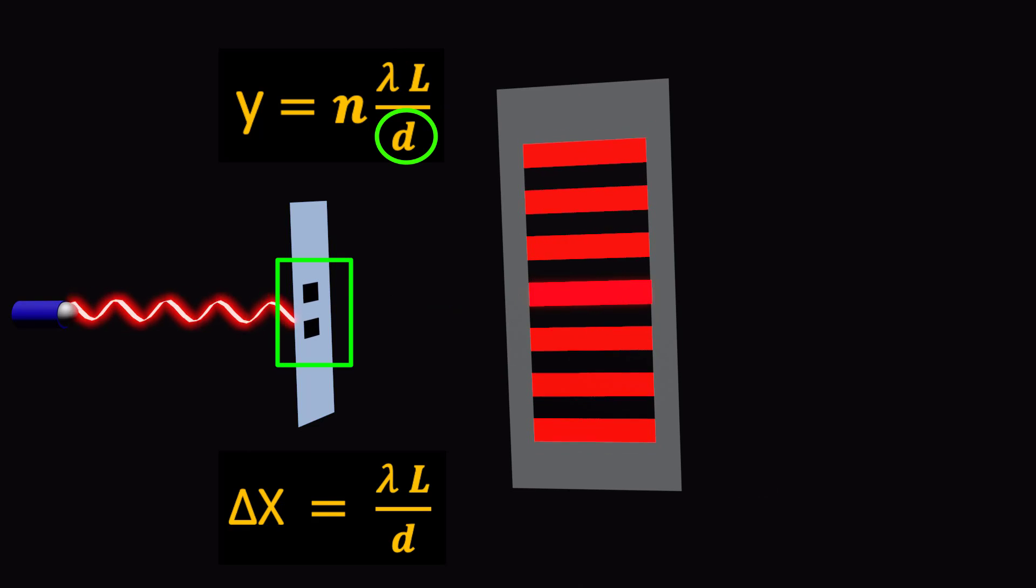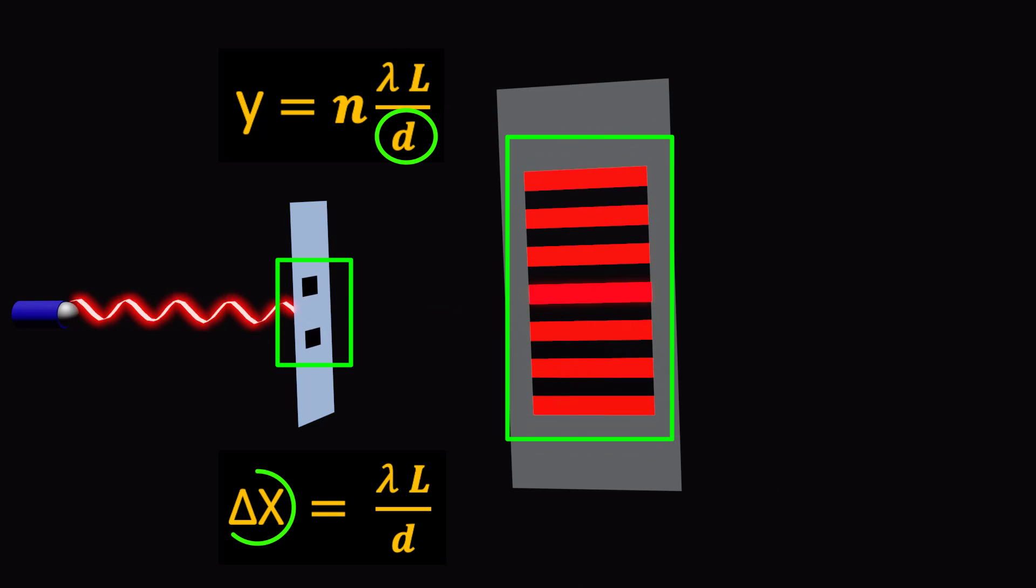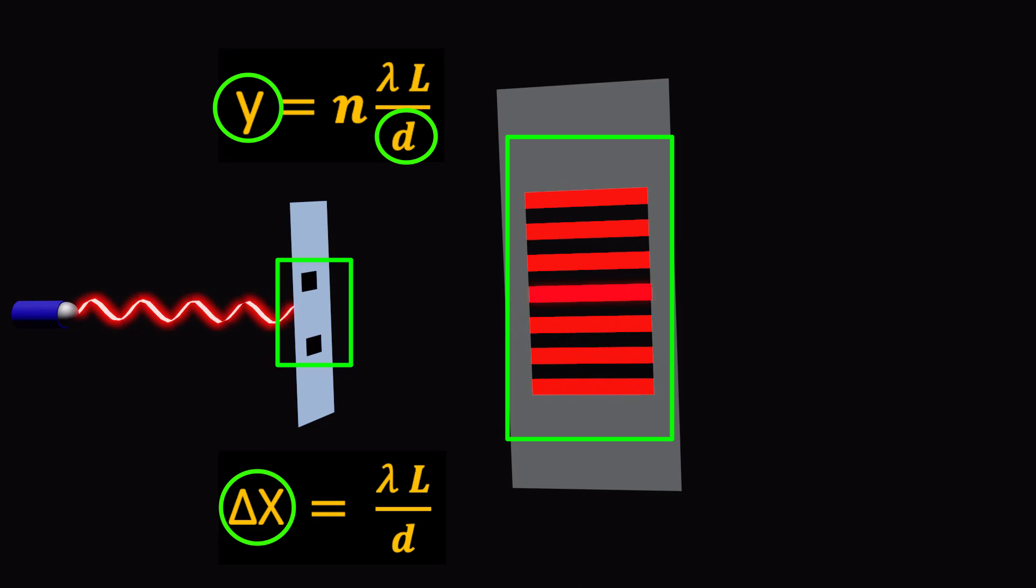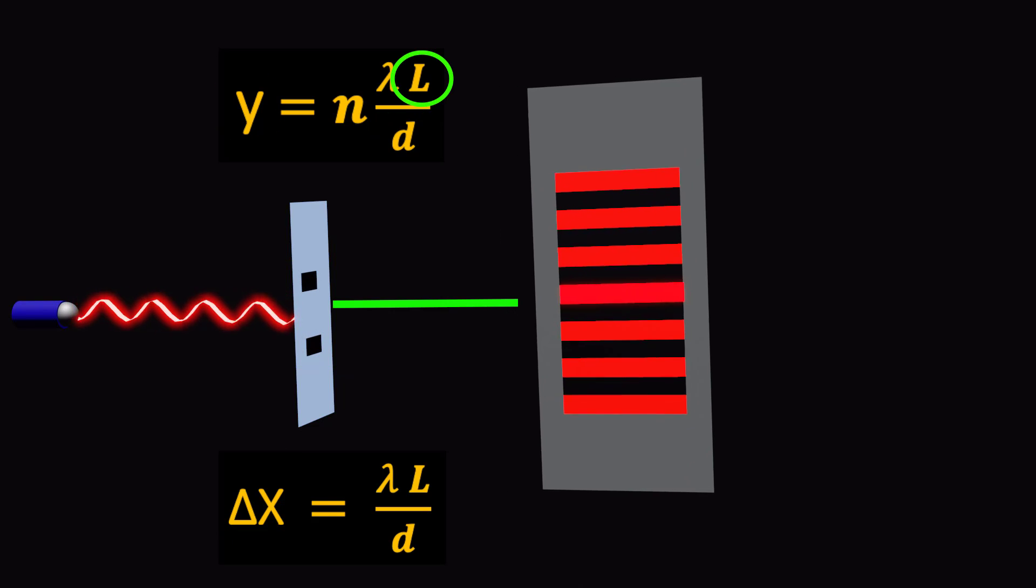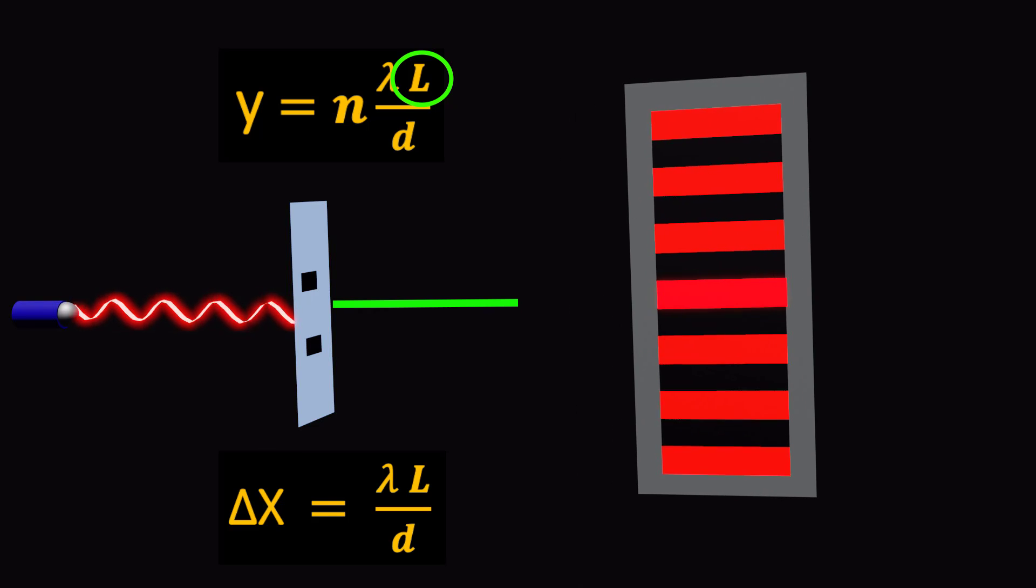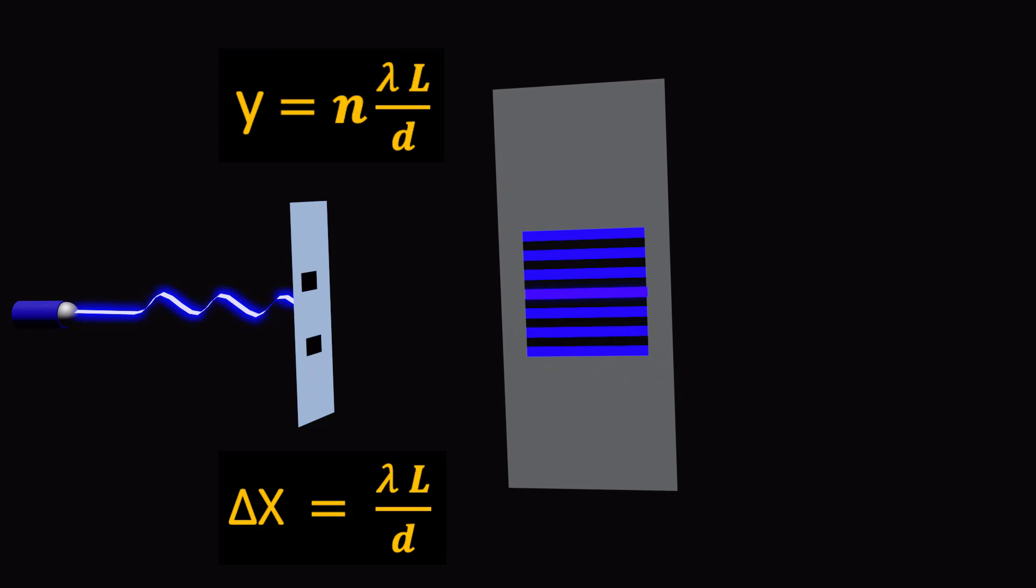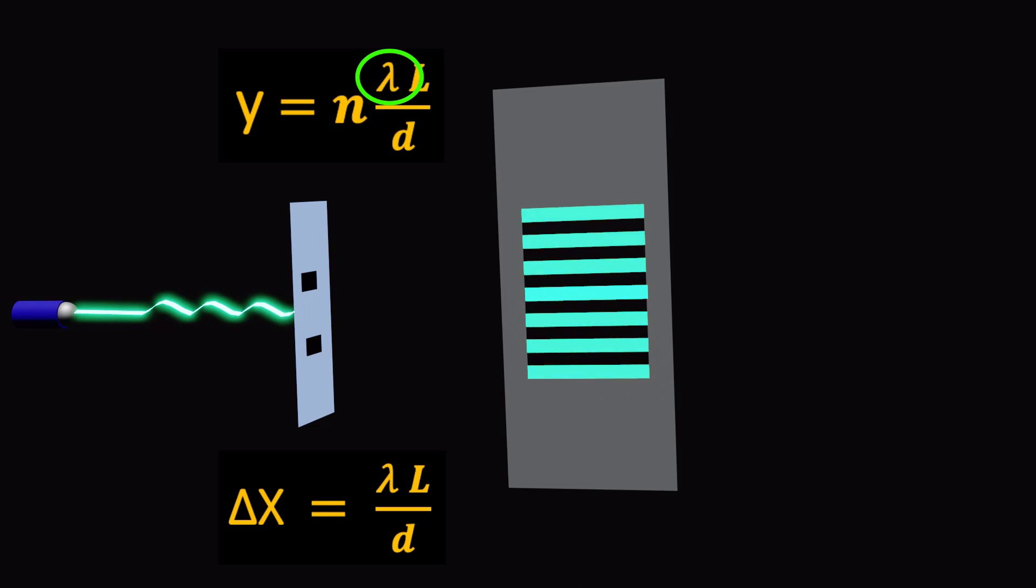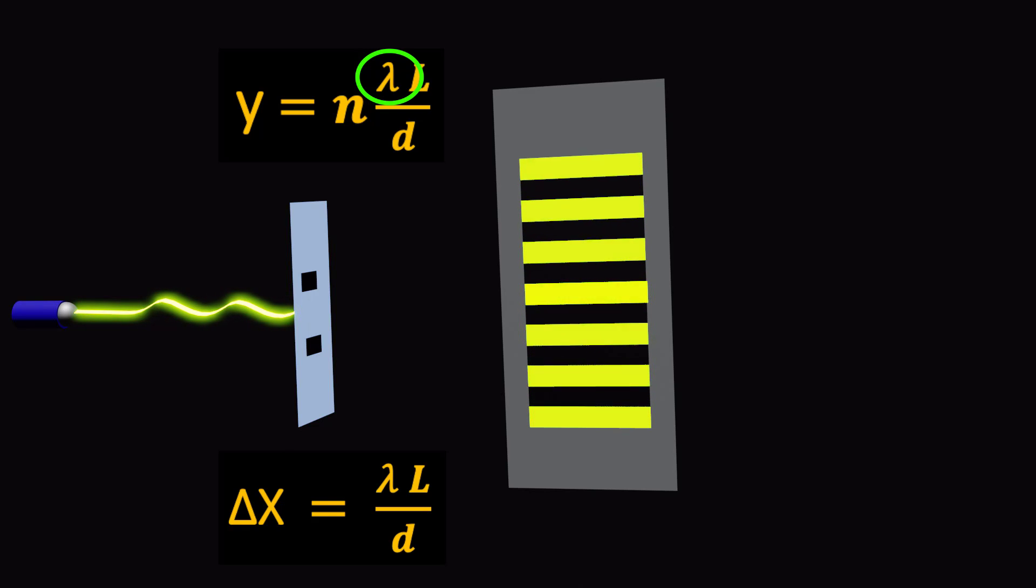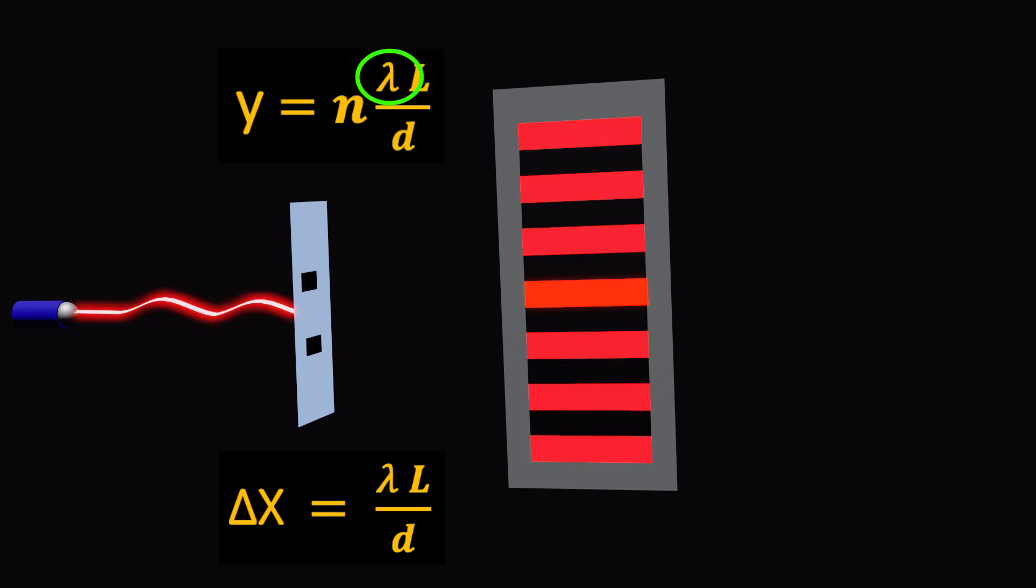Increasing the distance between the slits will decrease the fringe spacing and their position in the interference pattern. Similarly, increasing the wavelength of light will also increase the fringe spacing and their positions in the interference pattern.